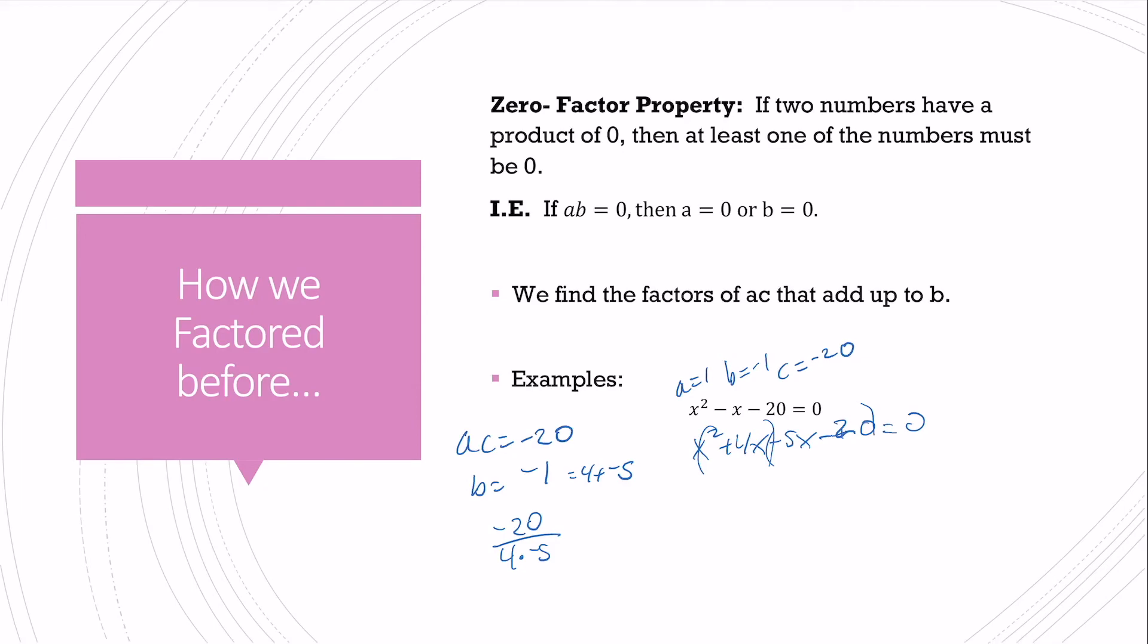The greatest common factor of x squared and 4x is x. The greatest common factor of negative 5x and negative 20 is negative 5. So now I have both these looking the same, which means I did my problem correctly. I collect my like terms. I've got x minus 5 times x plus 4 equals zero. And now I use the zero factor property to set each of these factors equal to zero. I find my solutions are x equals negative 4 and x equals positive 5, and I could write them together as my solution set.